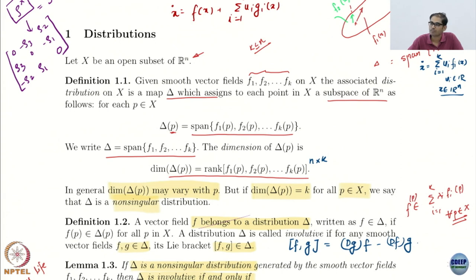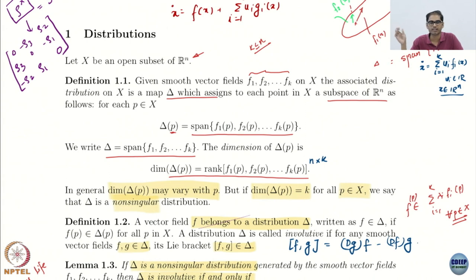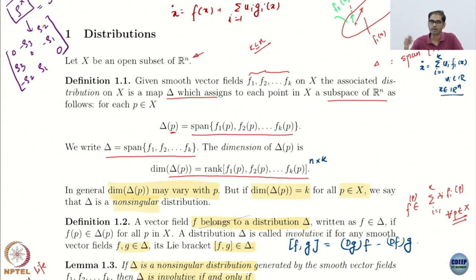The concept is pretty simple. Instead of vectors, you have vector fields. So you have to plug in a point to get a vector at that point, and then the distribution is just the span of all these vectors at that point. The rank is just the rank of those vectors at that point. If the rank is independent of the point, it is a non-singular distribution.